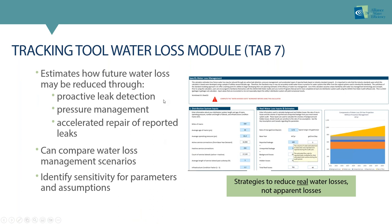The specific water loss module is tab seven of the tracking tool. All input tabs are numbered and water loss is tab seven. This module estimates how future water loss may be reduced through proactive leak detection, pressure management, and accelerated repair of reported leaks. You can compare different water loss management scenarios — play with all three strategies, do one or all at different levels — and look at sensitivity for parameters and assumptions to do a more robust scenario analysis. These strategies model real water losses, not apparent losses.